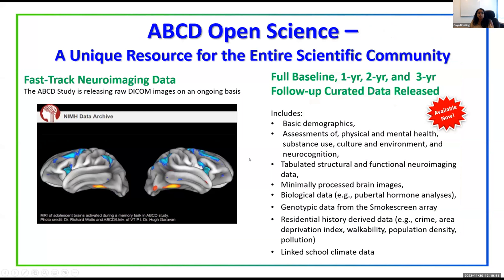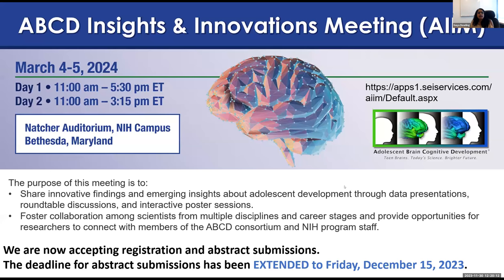Currently available data includes fast-track neuroimaging released continuously, plus annual releases of all other data. The data set now has the full cohort baseline, one-year, two-year, and three-year follow-up data. We're also excited about the ABCD Insights and Innovations meeting in March 2024 on March 4th and 5th, which will showcase diverse analyses being done with ABCD data. We are accepting abstract submissions. With that, I'll turn it over to John.